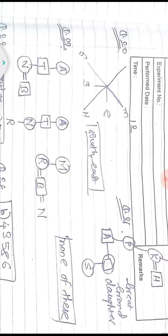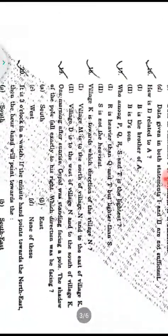Question twenty: It is three o'clock on a watch. If the minute hand points towards the northeast, in which direction will the hour hand point? At three o'clock, the hour hand and minute hand are 90 degrees apart. The minute hand is northeast, and since the hour hand is 90 degrees from it, the hour hand points towards south-east. Answer: south-east.